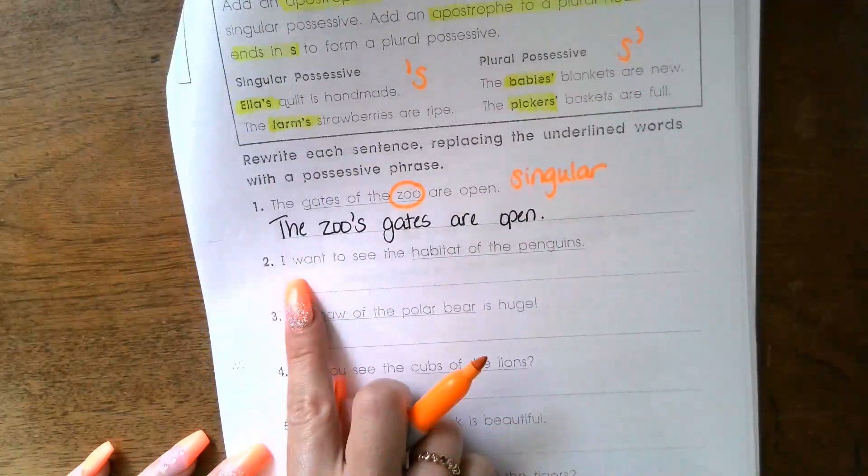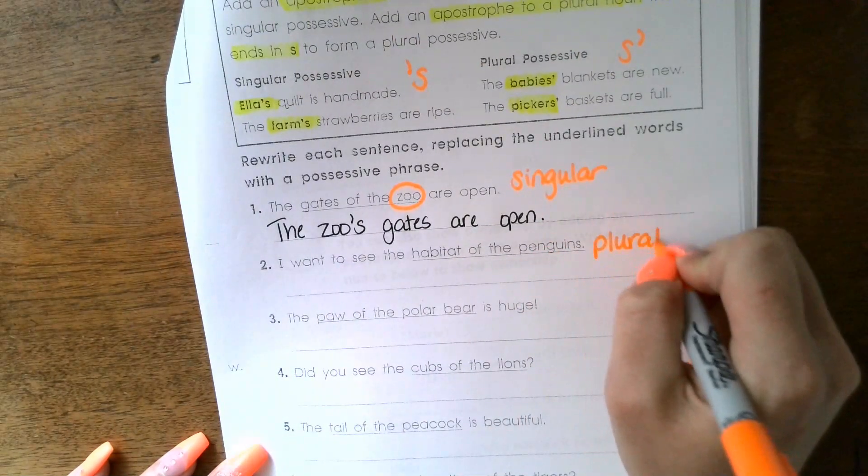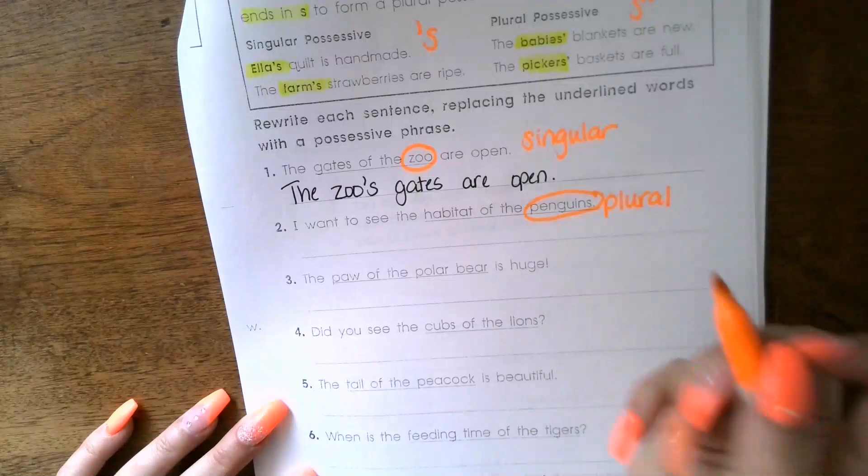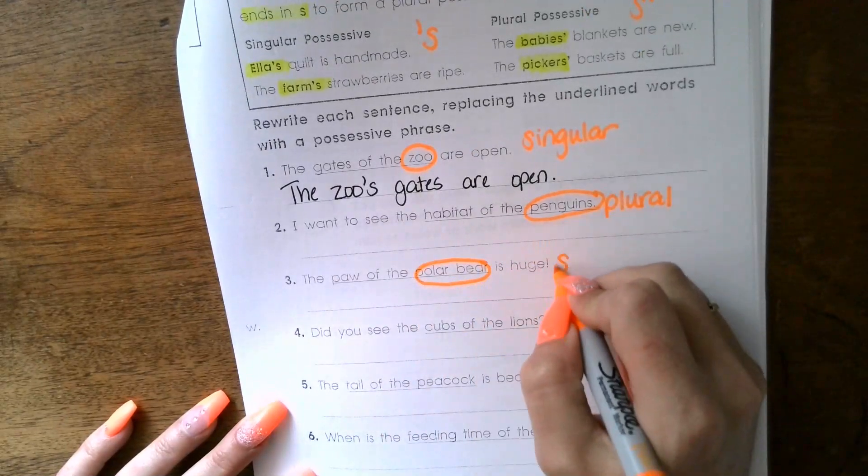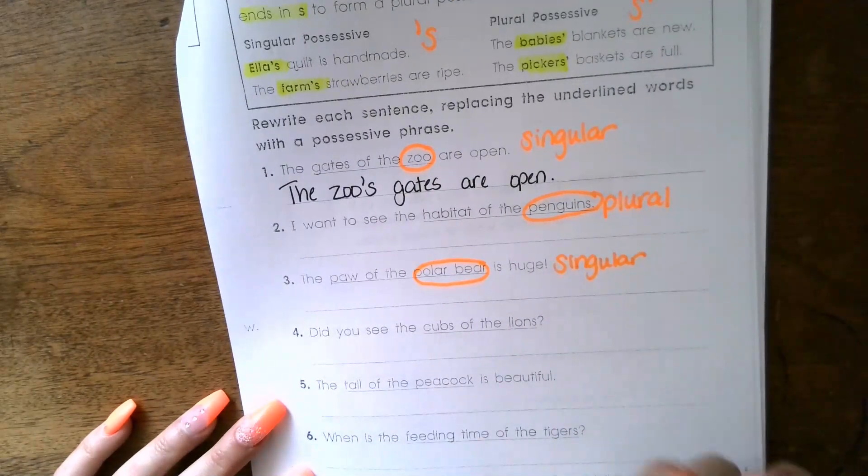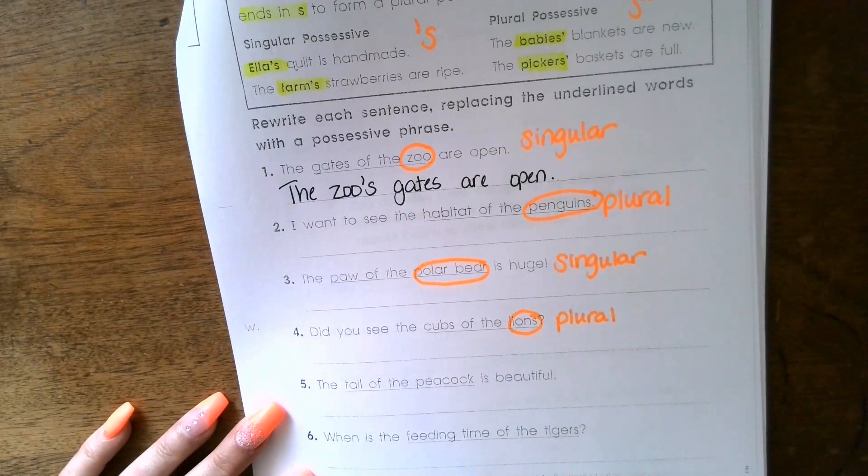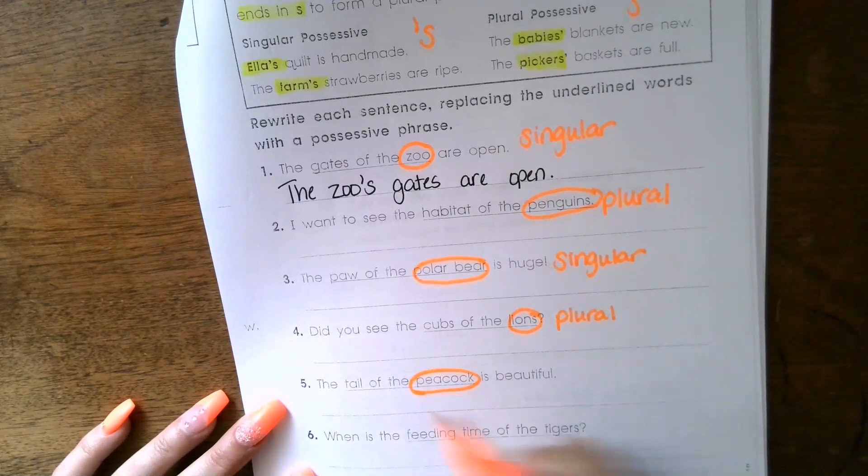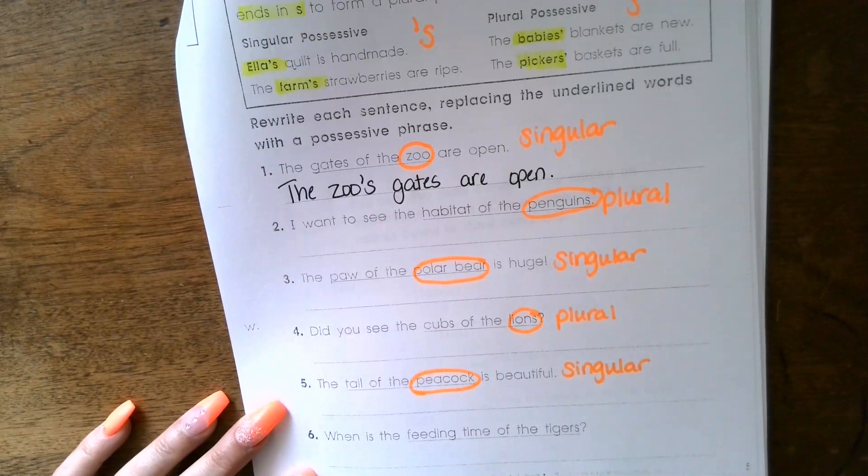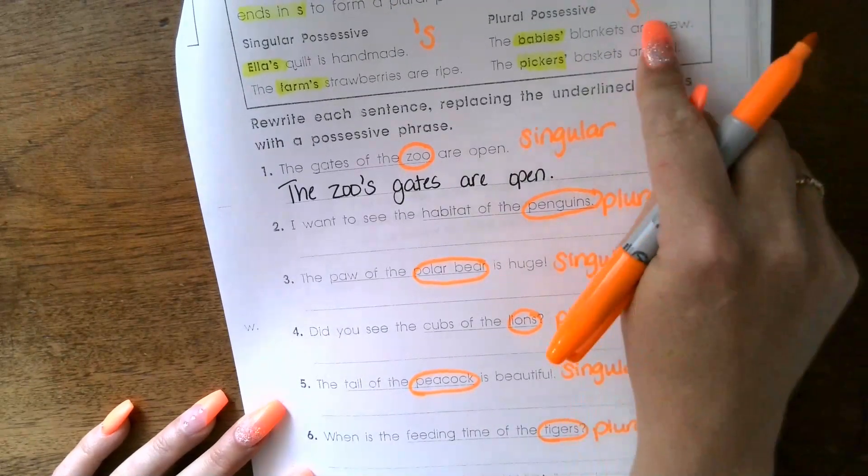Number two: I want to see the habitat of the penguins - penguins is plural. Number three: the paw of the polar bear is huge - polar bear is singular, only talking about one. Number four: did you see the cubs of the lions? - lions is plural. Number five: the tail of the peacock is beautiful - peacock is singular. Number six: when is the feeding time of the tigers? - tigers is plural. So remember, if it's plural we use S and then an apostrophe.